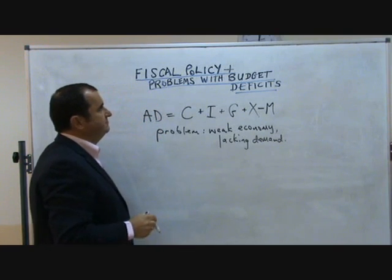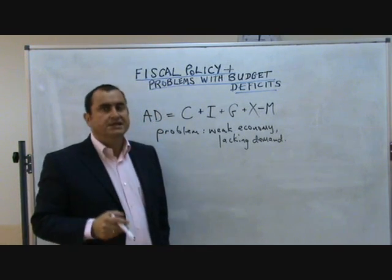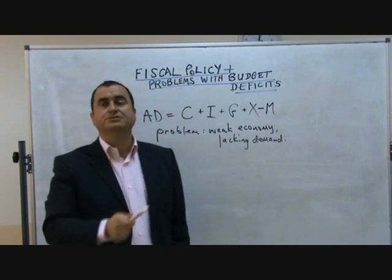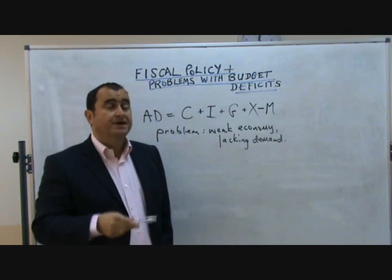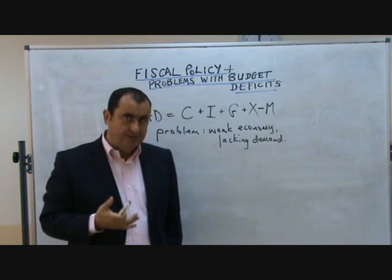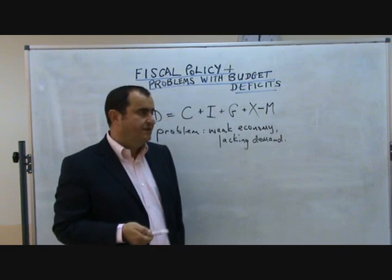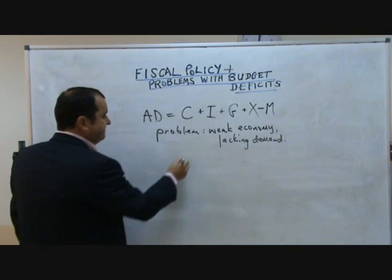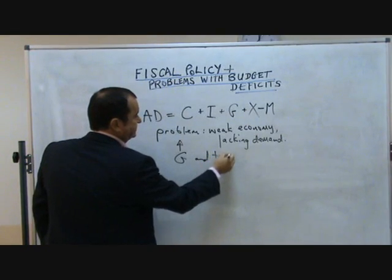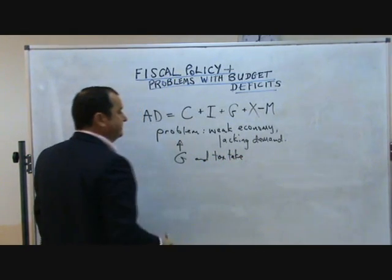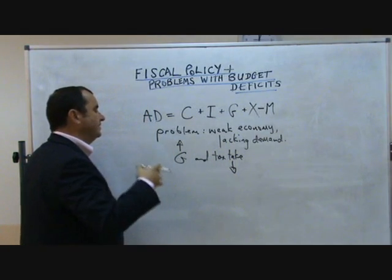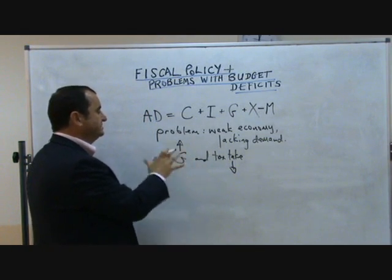That's the theory. But in recent years, governments have got themselves into problems with their own finances because they've done too much loosening of their fiscal policy, and year after year they've overspent and built up enormous national debts or public debts. If government spending increases and the tax take of the government — that's all the revenue it receives — falls, then clearly there's a problem for governments in their financing.